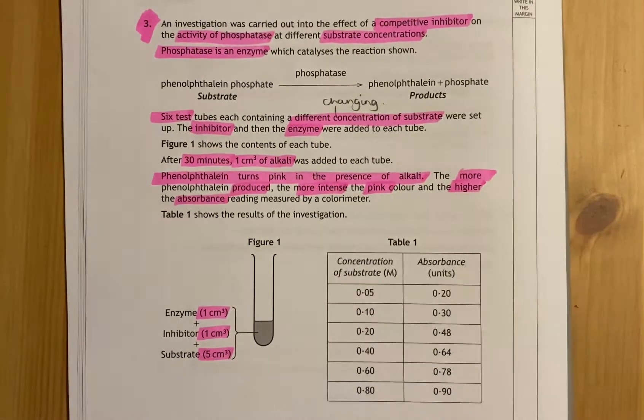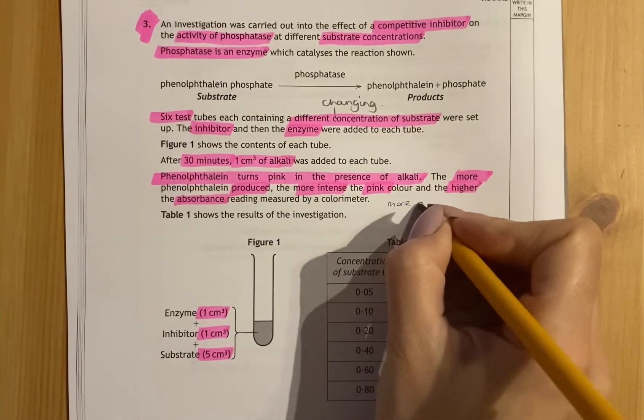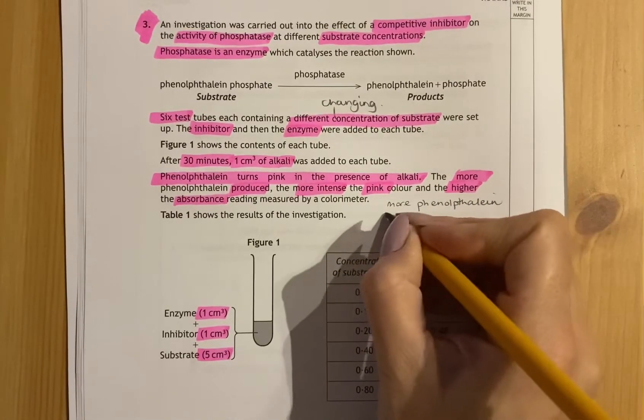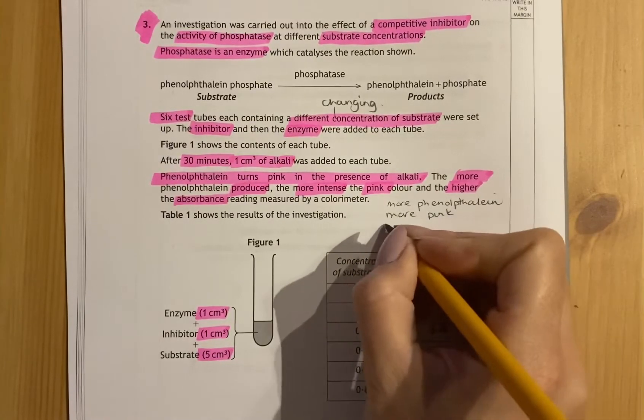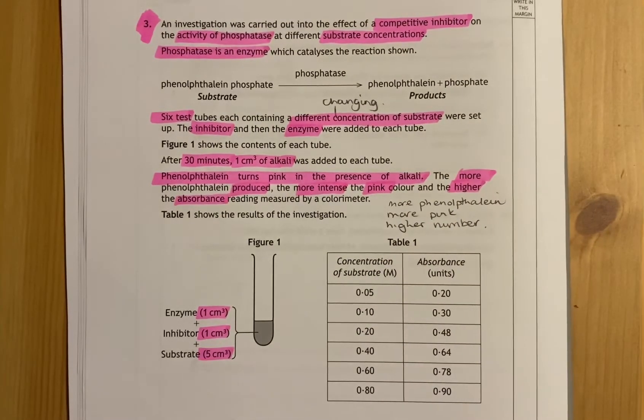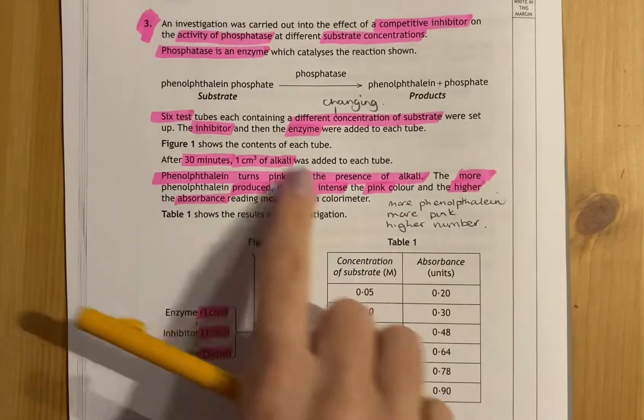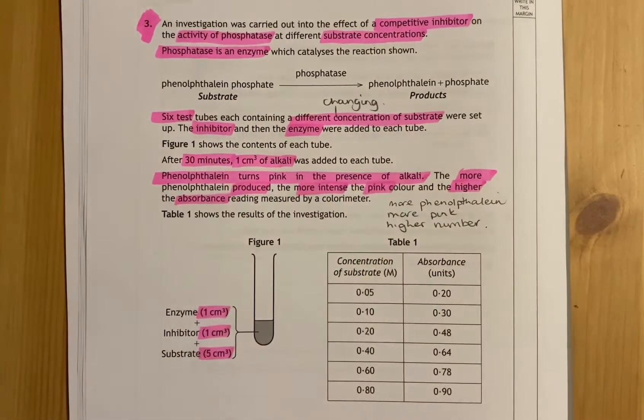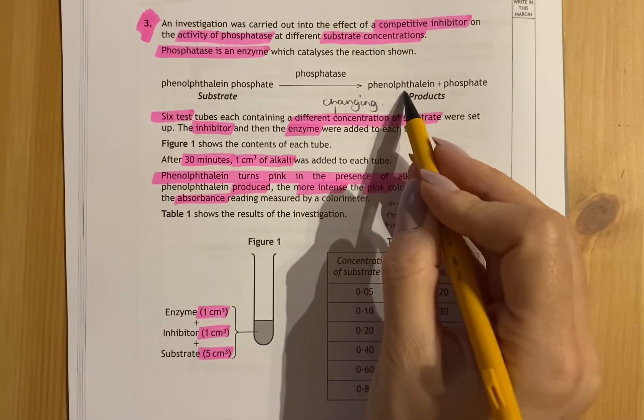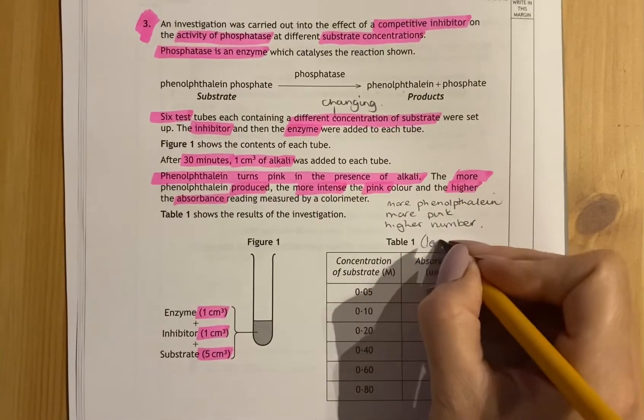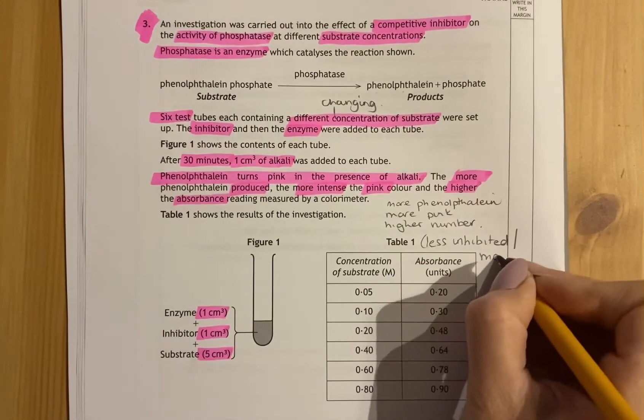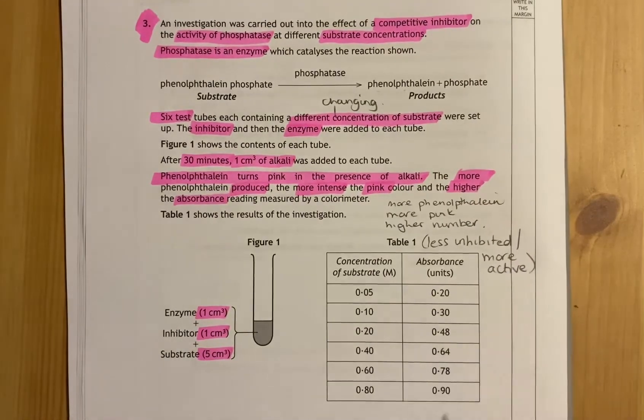The more phenylphthalene produced, the more intense the pink color, so the stronger the pink is and the higher the absorbance measured by the colorimeter. So to explain what this means - if there's more phenylphthalene, there's more pink, and there's a higher number in the absorbance. If you look back at this experiment, that means there's been a product produced, so the enzyme is working and it's not being inhibited.